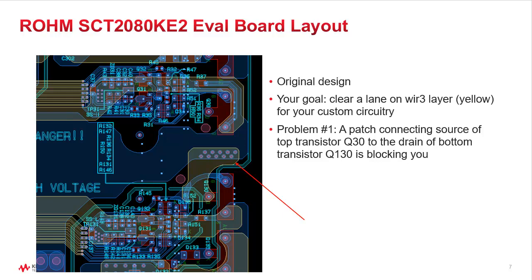How would you use such a thing? Here's a workflow. You take the original design and your goal is to clear a lane on the wire 3 level, which is yellow in this schematic, because you need to add some custom circuitry. The problem is that Roam has a patch of metal connecting the source of the top transistor Q30 to the drain of the bottom transistor Q130, and that's blocking you. So you need to clear this lane and modify the design. But you want to avoid introducing unwanted side effects — you don't want voltage spikes, you don't want EMI problems.